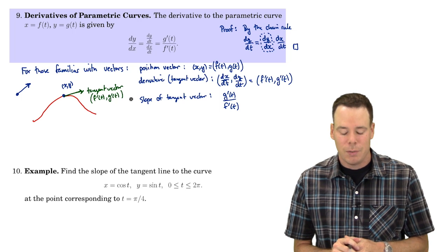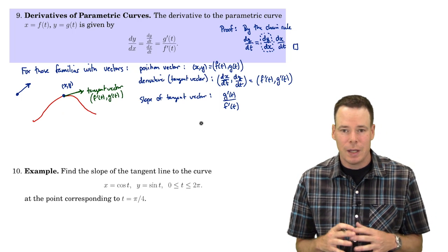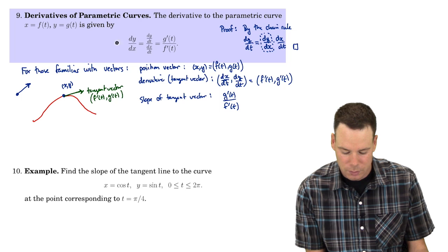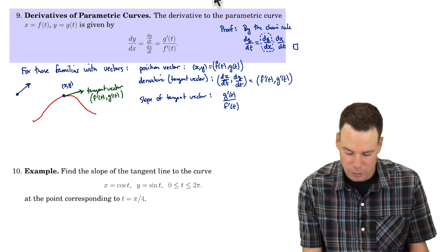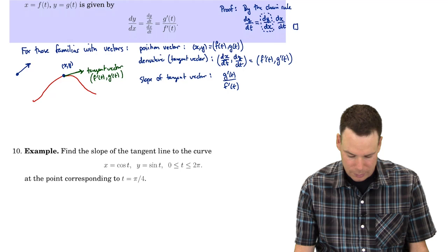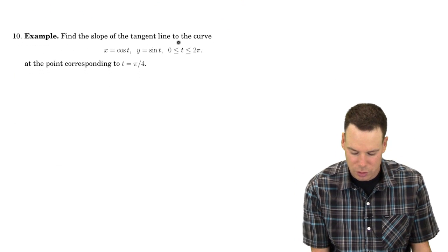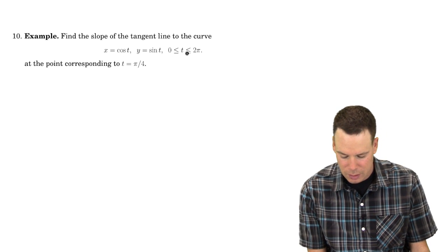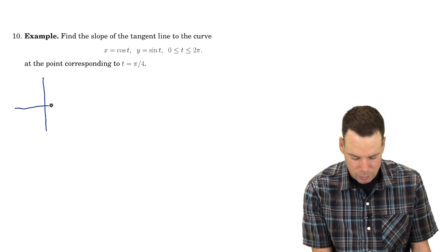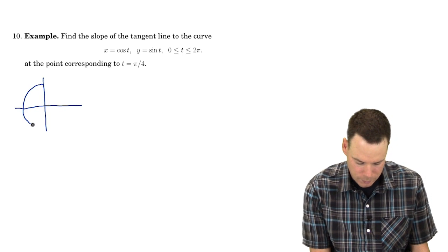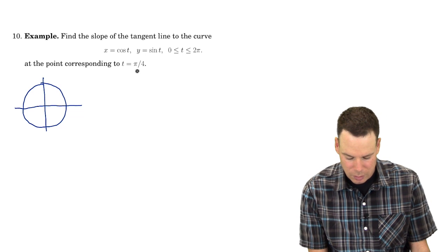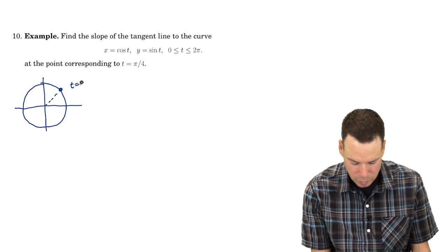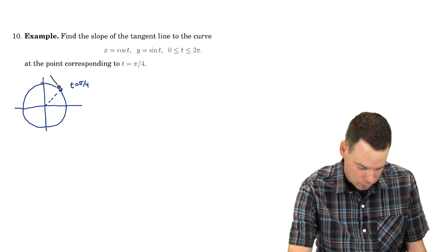We'll get into a lot more specific details about tangent vectors and curves in general in Calculus 3, but for our purposes right now we've got this derivative formula for parametric curves. Let's go ahead and apply it. We're going to find the slope of the tangent line to the curve x equals cos of t, y equals sin of t, as t goes from 0 to 2π — our familiar friend, the unit circle. We're interested in the tangent line at the point t equals π/4.